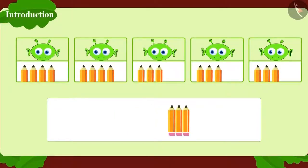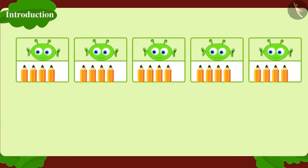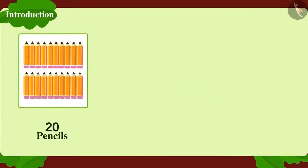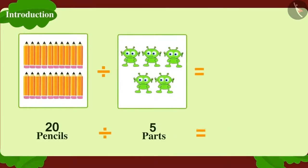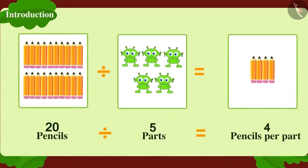We can divide 20 pencils among 5 friends in this manner. Each friend will get 4 pencils. How do we write this in the form of division? 20 pencils divided into 5 parts is 4 pencils per part.